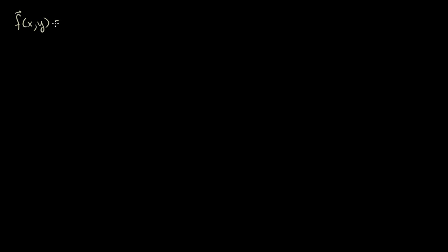Let's apply what we learned in the last video into a concrete example of the work done by a vector field on something going through some type of path through the field. So let's say that I have a vector field defined over ℝ² over the xy plane. It's a function of x and y that associates a vector with every point on the plane. And let's say my vector field is y times the unit vector i minus x times the unit vector j.